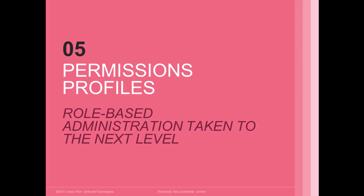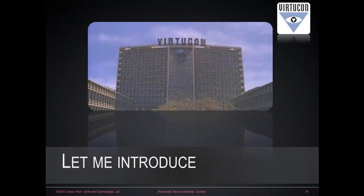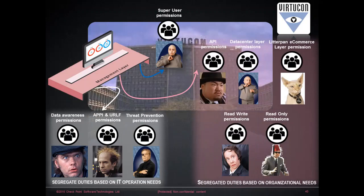Let's talk about the new permission profiles — role-based administration taken to the next level in R80. As an example, consider the fictive company Verticon Industries. Dr. Evil is the super admin and director. He has different administrators with delegated roles: a data awareness permission administrator, application and URL filtering administrators, threat prevention administrators, and administrators specific to the e-commerce data center. Duties are segregated based on both IT operational needs and organizational needs.